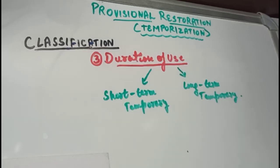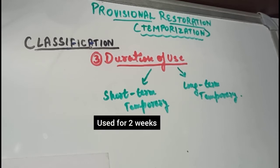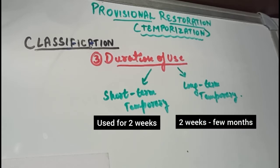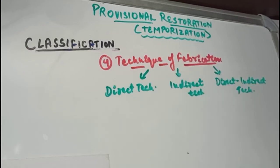Based on duration of use, they can be short-term temporary, used for up to two weeks, or long-term temporary, used for two weeks to a few months. Long-term temporization may be due to lab delays, patient unavailability, or deliberate reasons like correction of TMJ disorders or periodontal diseases. Based on technique of fabrication, provisional restorations can be made using a direct technique, indirect technique, or direct-indirect technique.